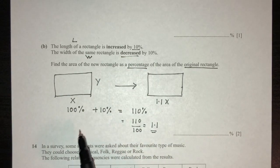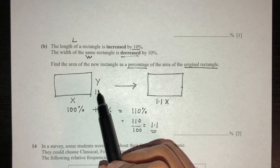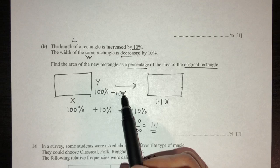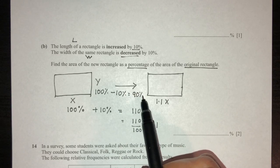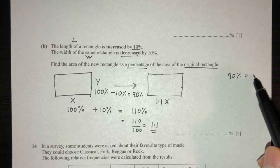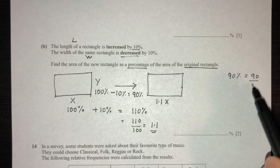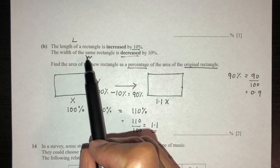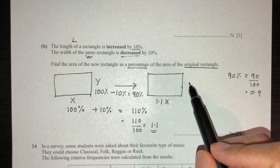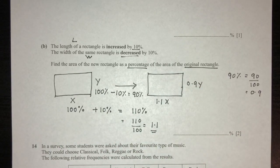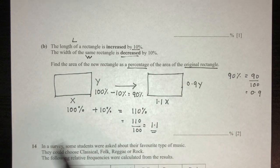The same way, the width is decreased by 10 percent. The initial width is always 100 percent. Decreasing by 10 percent gives 90 percent. 90 percent is 90 over 100, which is 0.9, so the new width will be 0.9y.